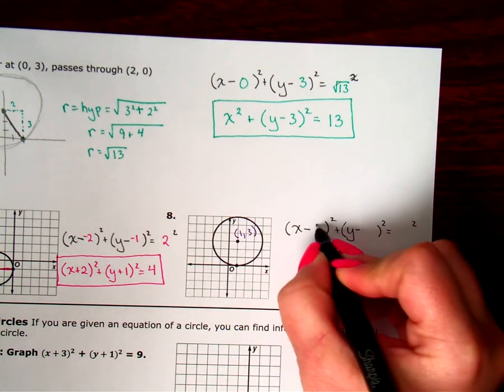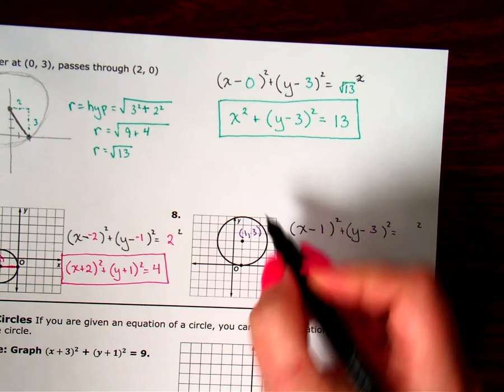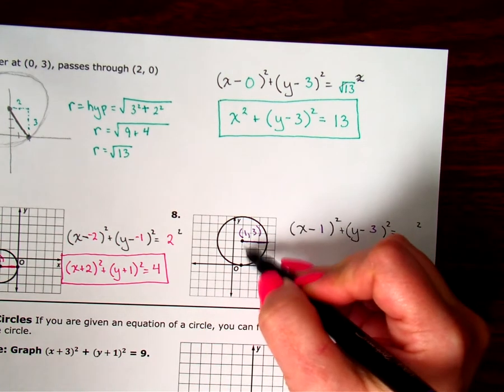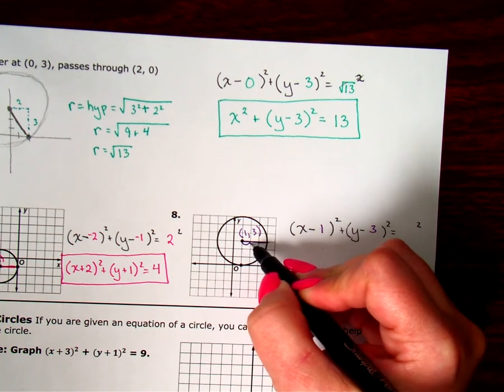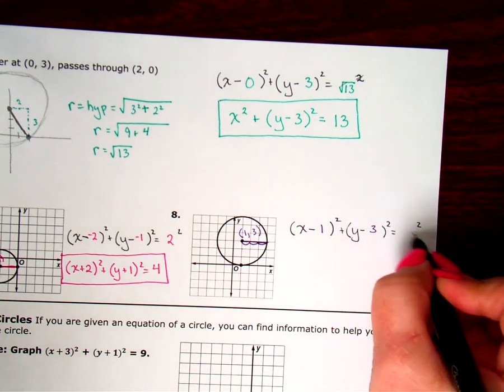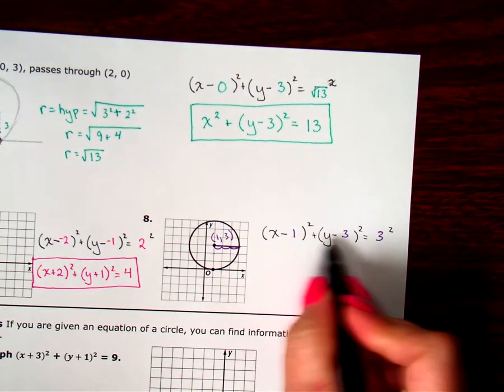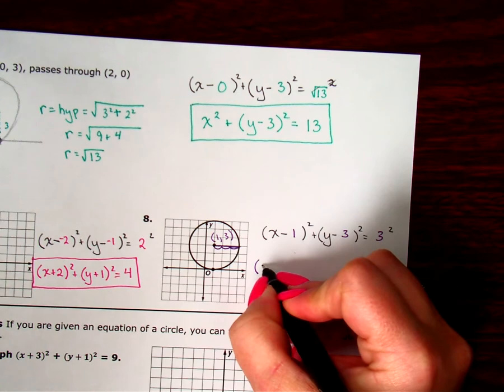And then my radius, you can either count horizontally or you can count vertically. Typically it is 1, 2, 3 units long. Simplify double negatives, zeros, and square the radius. There's no double negatives, there's no zeros, so nothing happens to the left side.